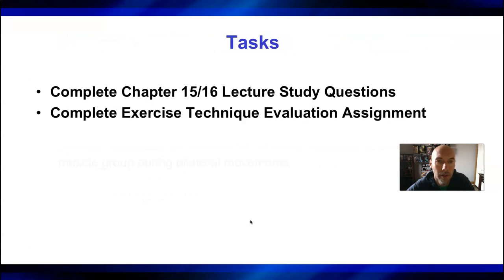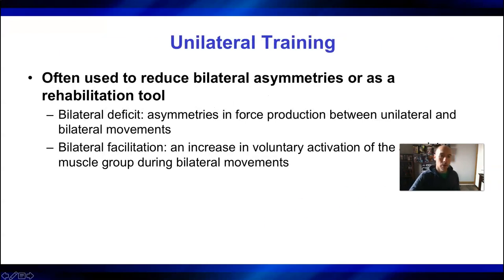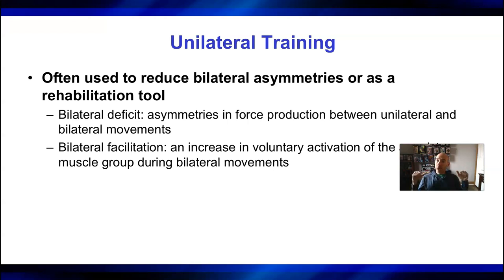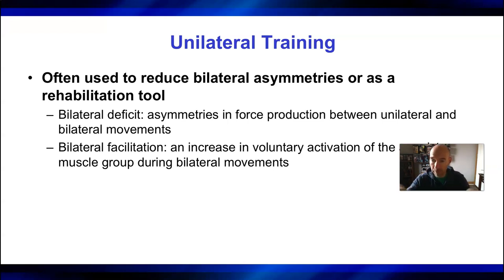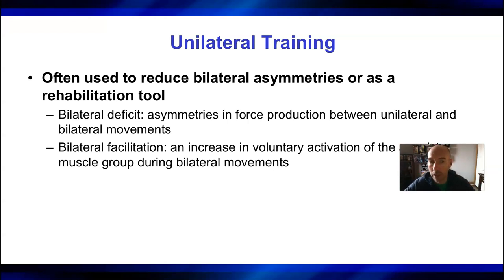Now let's finish with a discussion of unilateral training, which is very important. Unilateral refers to single limb; bilateral refers to double limb. The key question is: are both limbs doing the same thing at the same time? In a back squat, both feet are even and both legs are flexing and extending at the same time — that's a bilateral exercise. A squat, a deadlift, and a bench press are all examples of bilateral exercises, because both hands and both arms are doing the same thing at the same time.